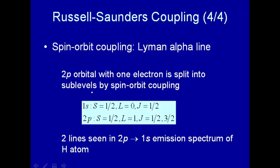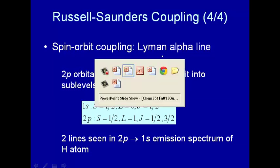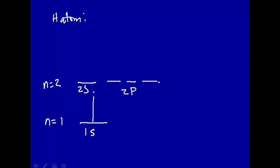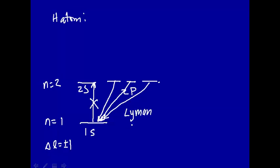Let's go back and look at the Lyman alpha line to see what's going on — that was what originally prompted us to look at spin-orbit coupling. For the hydrogen atom, we have N equal one and N equal two. For N equal one there is just the 1s state. For N equal two you can have 2s or 2p. The selection rule requires delta l equal plus or minus one for a single electron, so the 1s to 2s transition is not allowed since that goes from L equal zero to L equal zero. The only allowed lines are the 2p to 1s transitions — that's the Lyman alpha line.